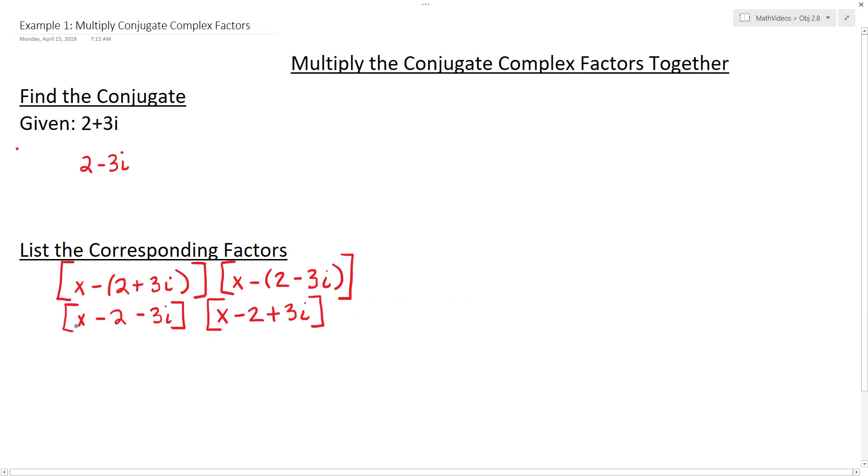And then what we do from there is, for good practice, since we're going to end up multiplying these factors together, we group the x term and the real part. And there's a reason we do that, and it actually helps in the multiplication. So then now I would multiply these two factors together since that's our goal.